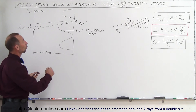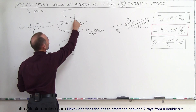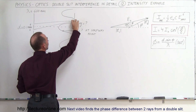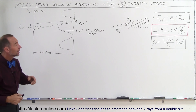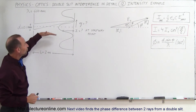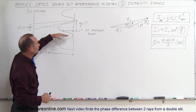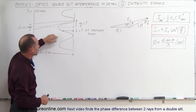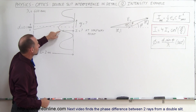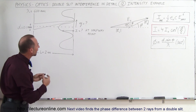First question: what is the distance from the central maximum to the first minimum — this distance right here — in terms of what is y equal to? And secondly, at the halfway point between the central maximum and the first minimum — it doesn't matter if we go up or down, it's of course perfect symmetry — what will be the intensity at this location?